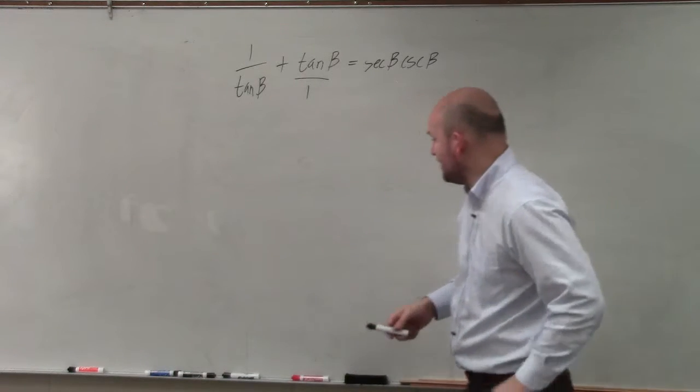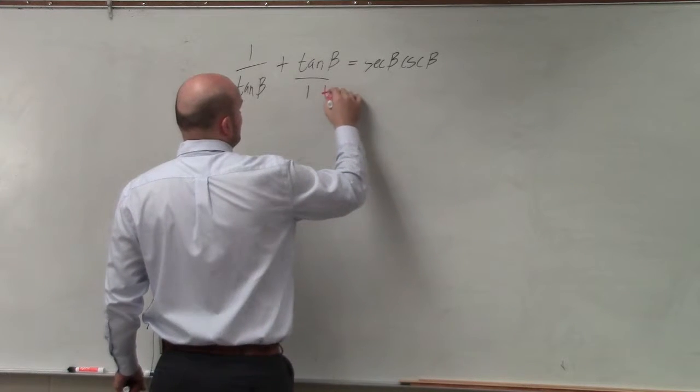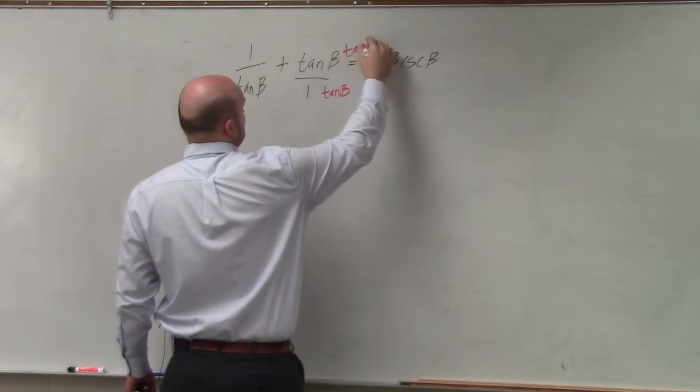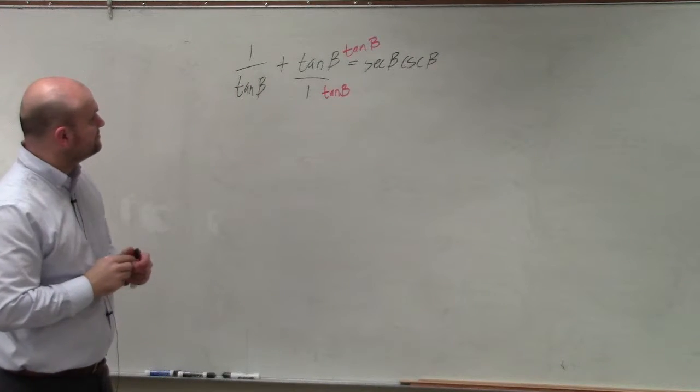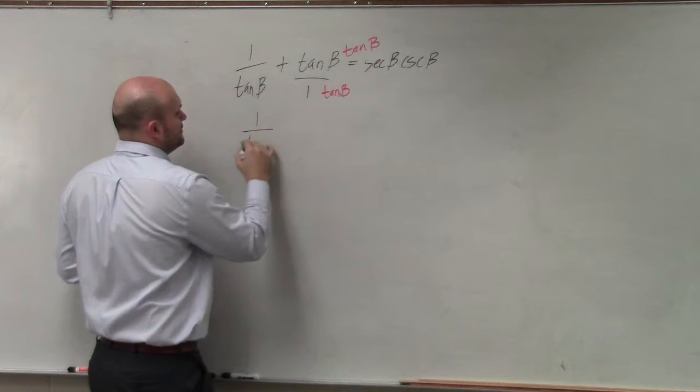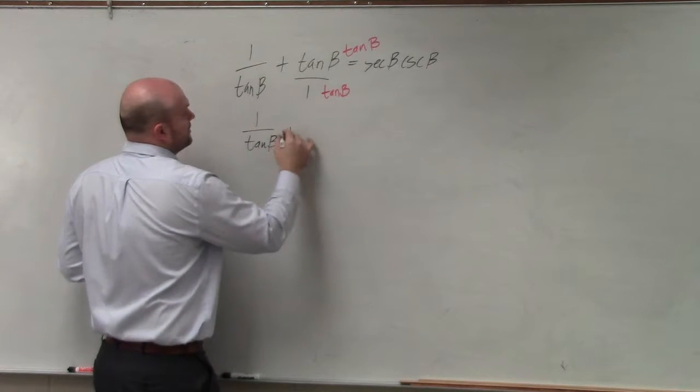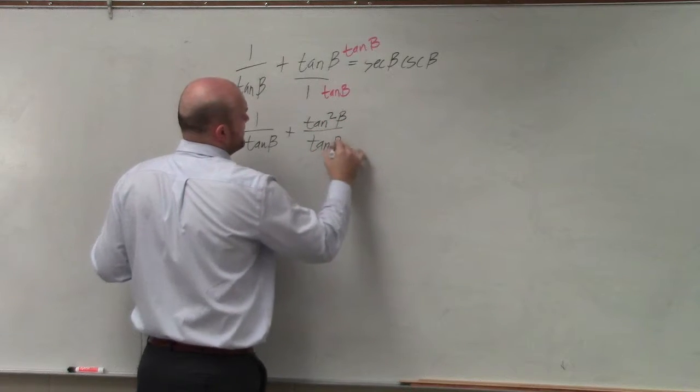Therefore, I can identify my common denominator to be tangent of beta. So I multiply the top and the bottom by tangent of beta and therefore I get 1 over tangent of beta plus tangent squared of beta over tangent of beta.